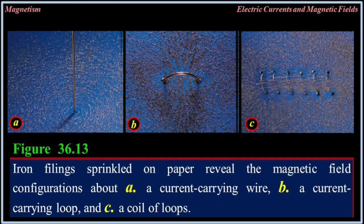Iron filings sprinkled on paper reveal the magnetic field configurations about: A, a current-carrying wire; B, a current-carrying loop; and C, a coil of loops.